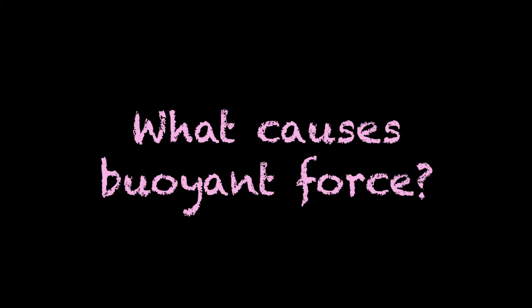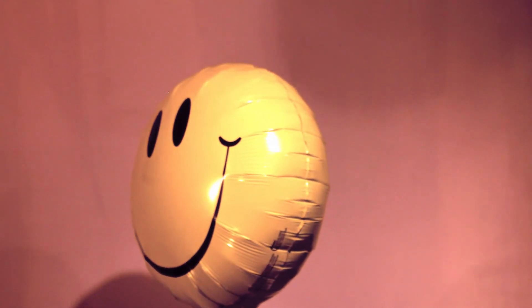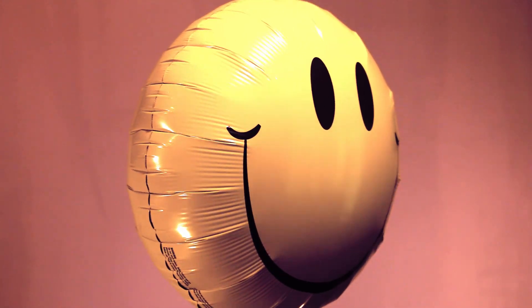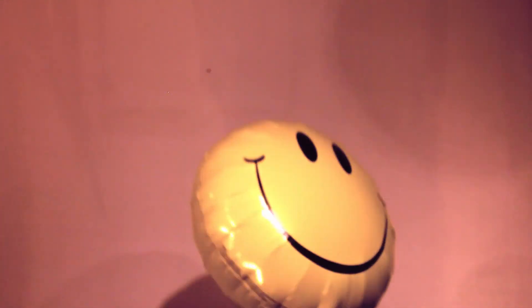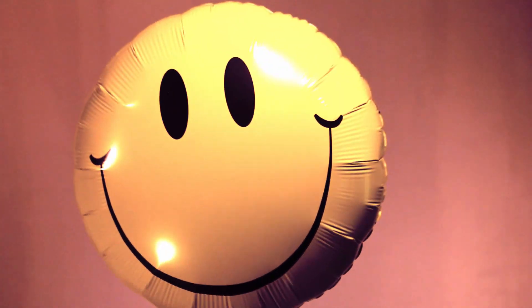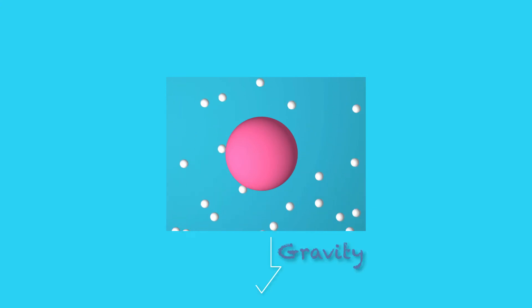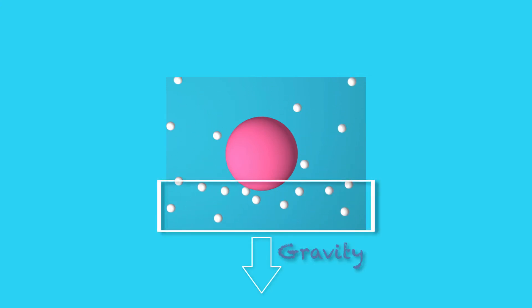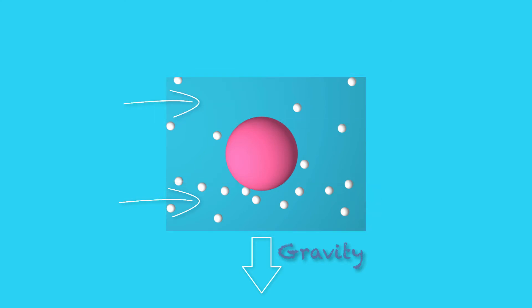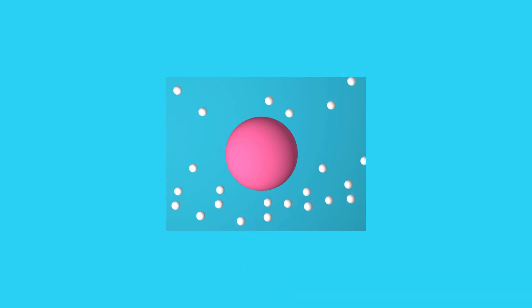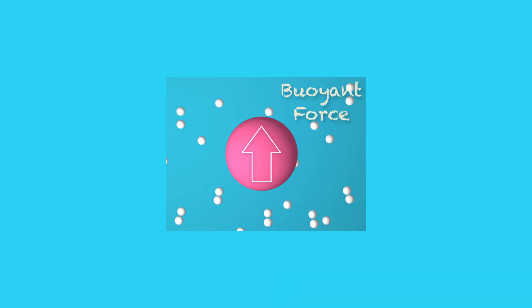Okay, that makes sense. But what causes buoyant force? Great question. If I take a marble and throw it at the balloon, it will give the balloon a little push. If I take a bunch of marbles and throw them at the balloon, the push on it is much stronger. The same happens with air. Air molecules are constantly bombarding the balloon. Since gravity attracts air molecules down, there are a bit more molecules under the balloon than on top of it, and they move a bit faster. When we add up all the little pushes from all the molecules, we end up with a buoyant force.